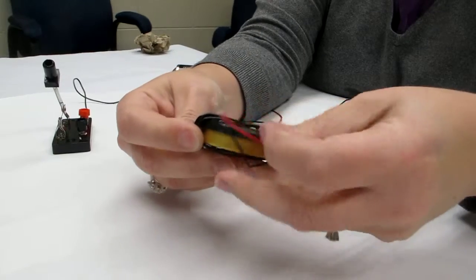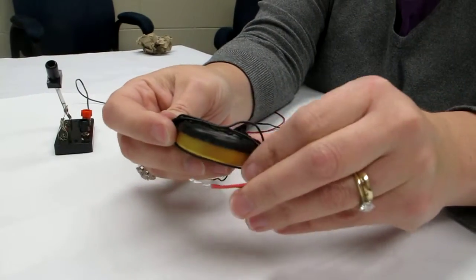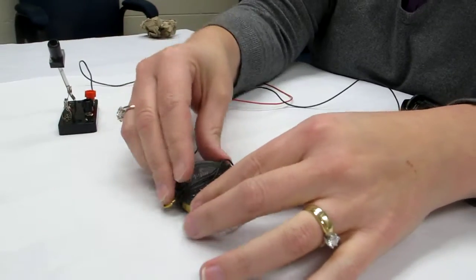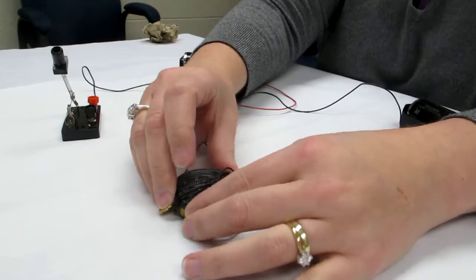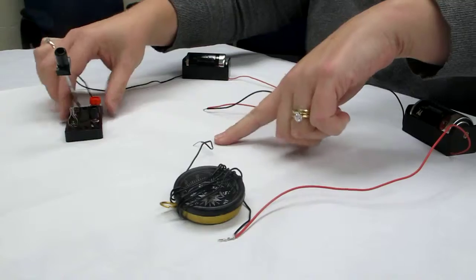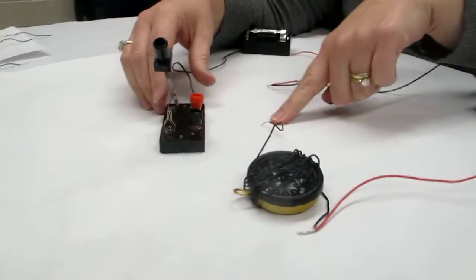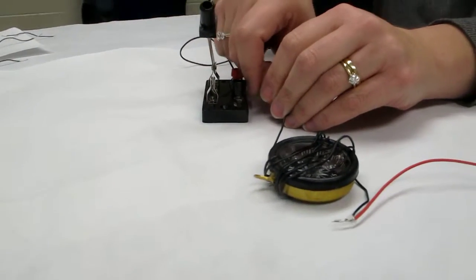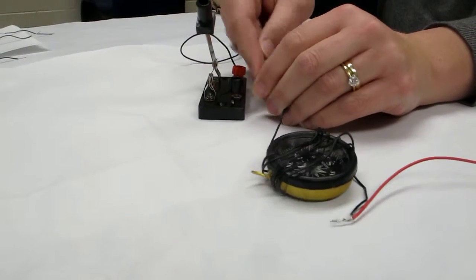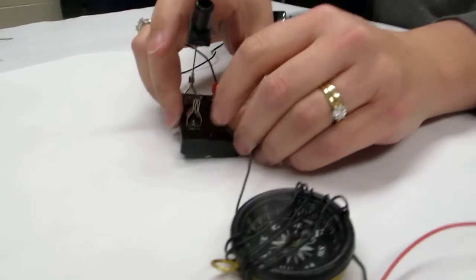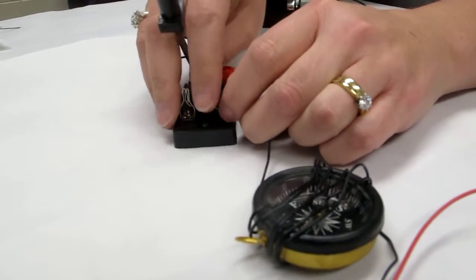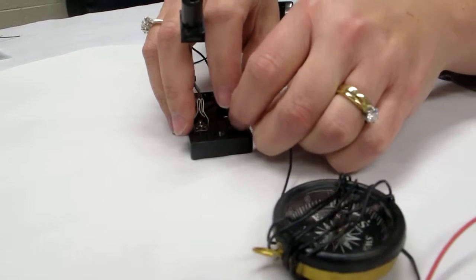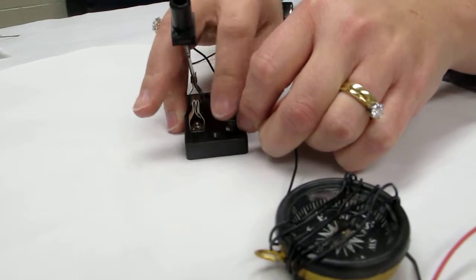Once you have as close to eight wraps as possible around the compass, you're going to go to the bottom of the knife switch. Again, just bending the exposed part of the wire, wrapping it around the screw, and then screwing that down.